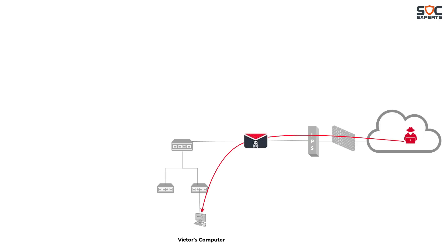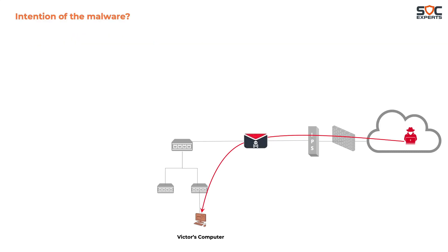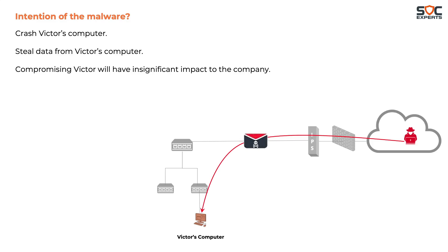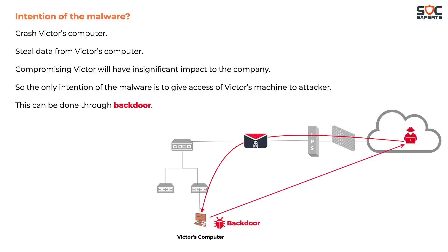But instead of sending a CV, the attacker sends malware. When Victor downloads the file, believing it to be a resume, his machine gets infected. An assumption is made that the malware is a zero-day and is not detected by antivirus. The attacker has now compromised Victor's computer, but crashing it or stealing local data would be insignificant. The only intention of the malware is to act as an entry point to the network, achieved through a backdoor that gives the attacker access to Victor's machine.